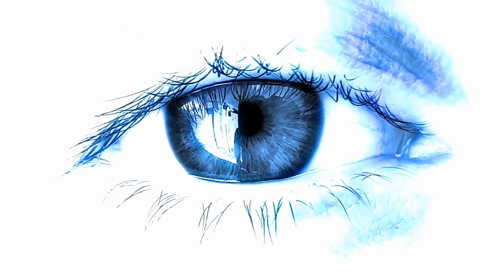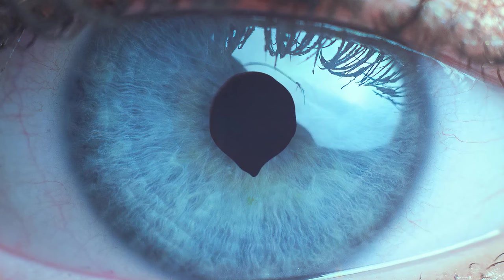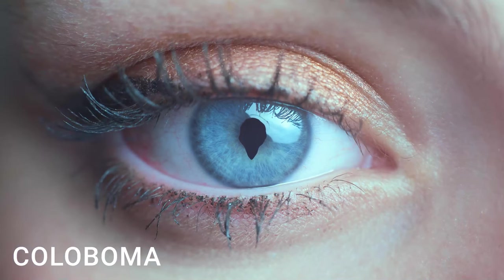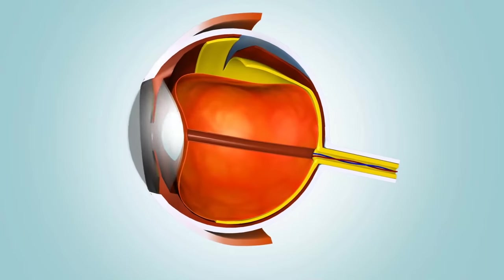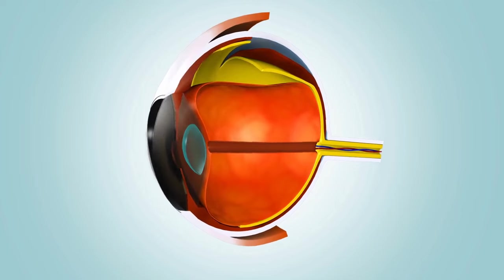Not all people have round pupils. Two people out of every 10,000 have unusually shaped pupils. Most commonly, they resemble keyholes. This eye disorder is called coloboma. Interestingly, some people with this condition don't have any problems with their vision.